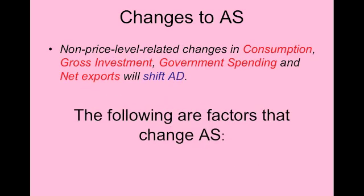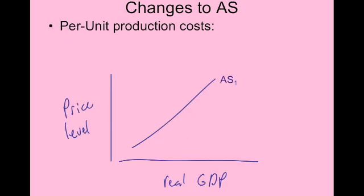When you shift aggregate supply, however, it's pretty easy. The main thing that changes aggregate supply is per unit production costs for the business sector. With aggregate demand, all four sectors are purchasing and demanding goods and services. But with aggregate supply, there's only one sector that supplies goods and services, and that's the domestic business sector. The only thing that affects their decisions of how much to supply is their per unit production costs.